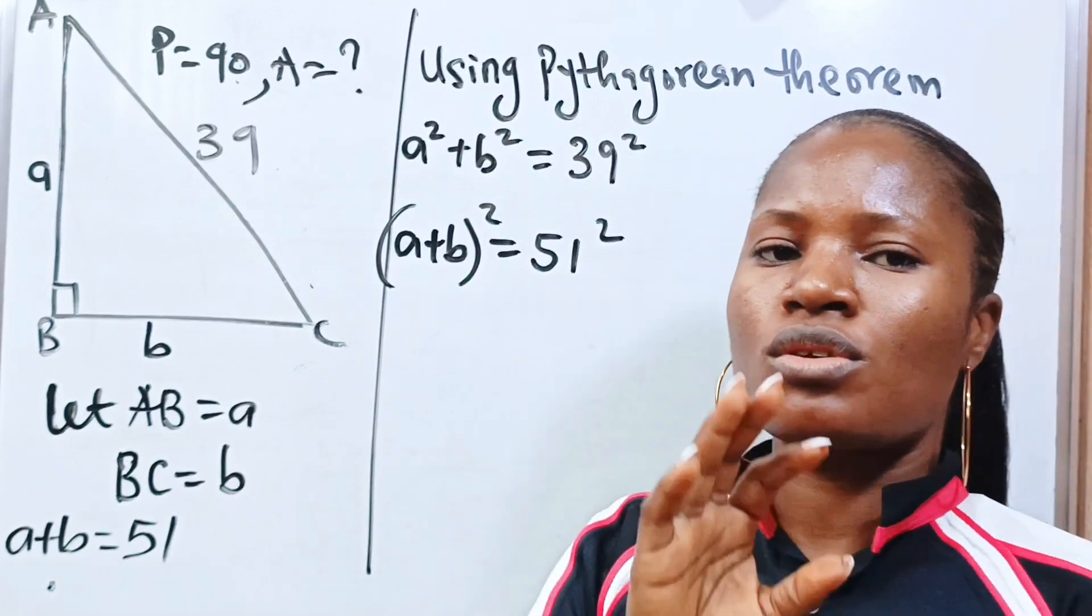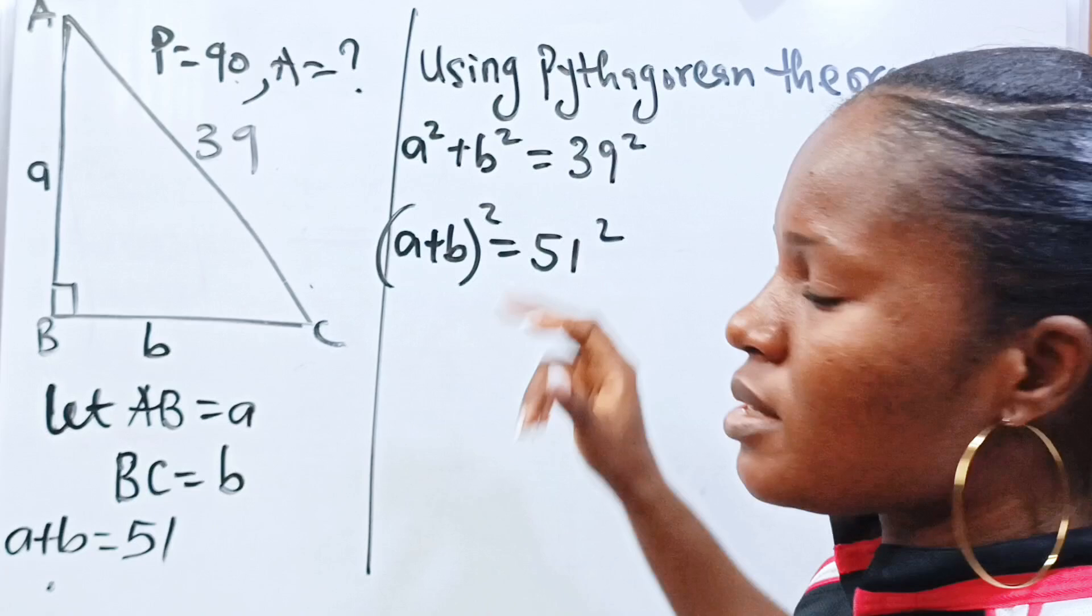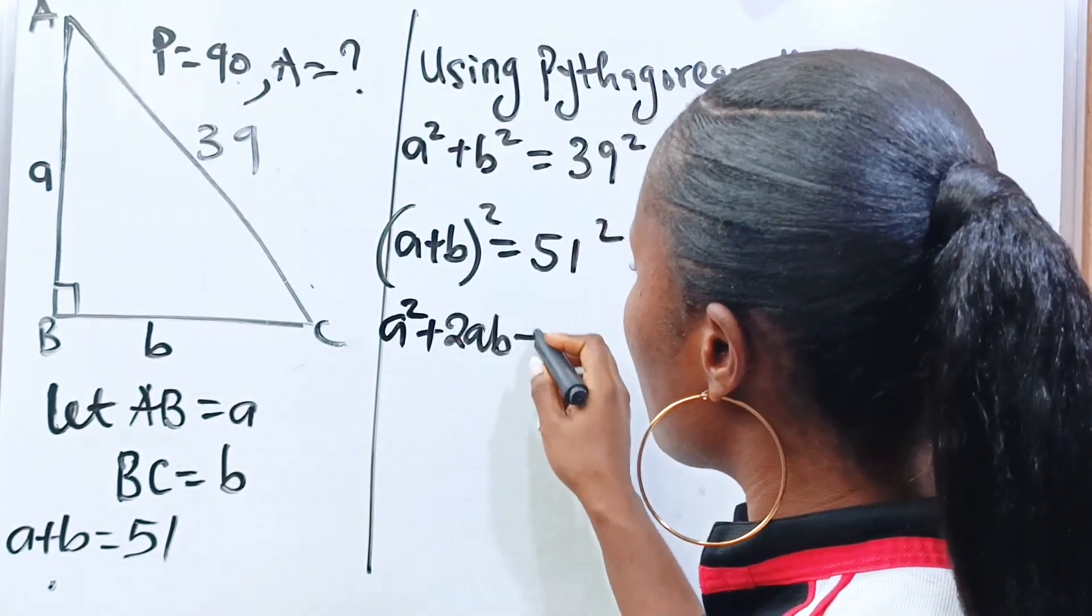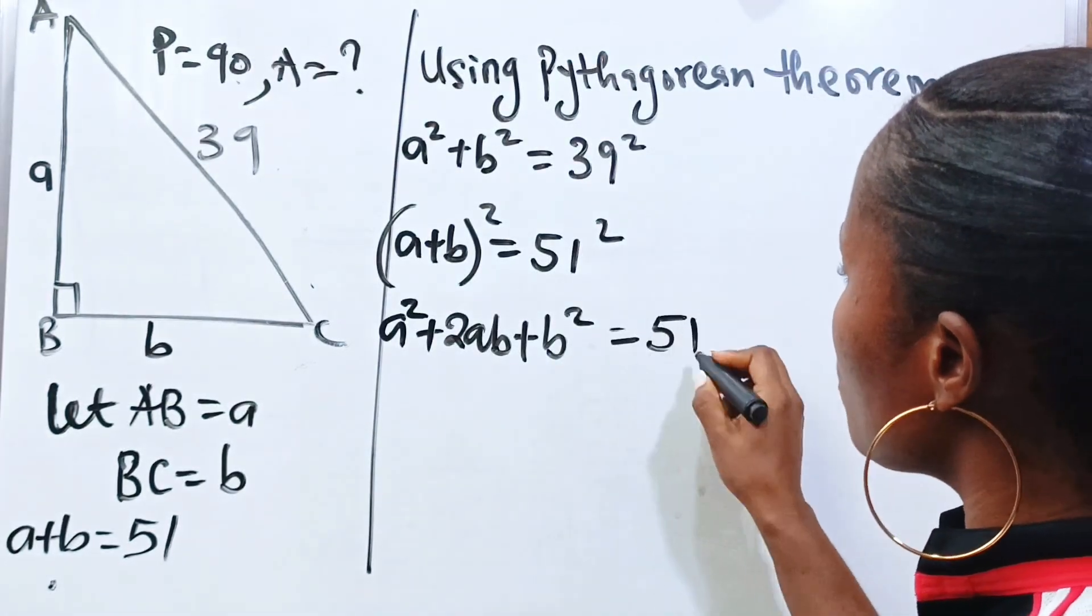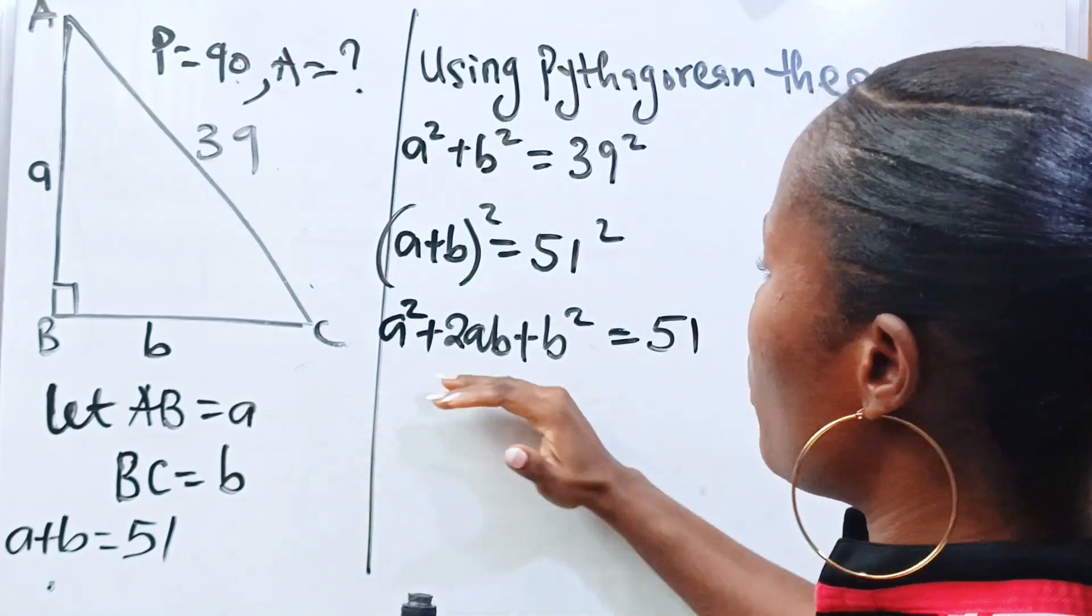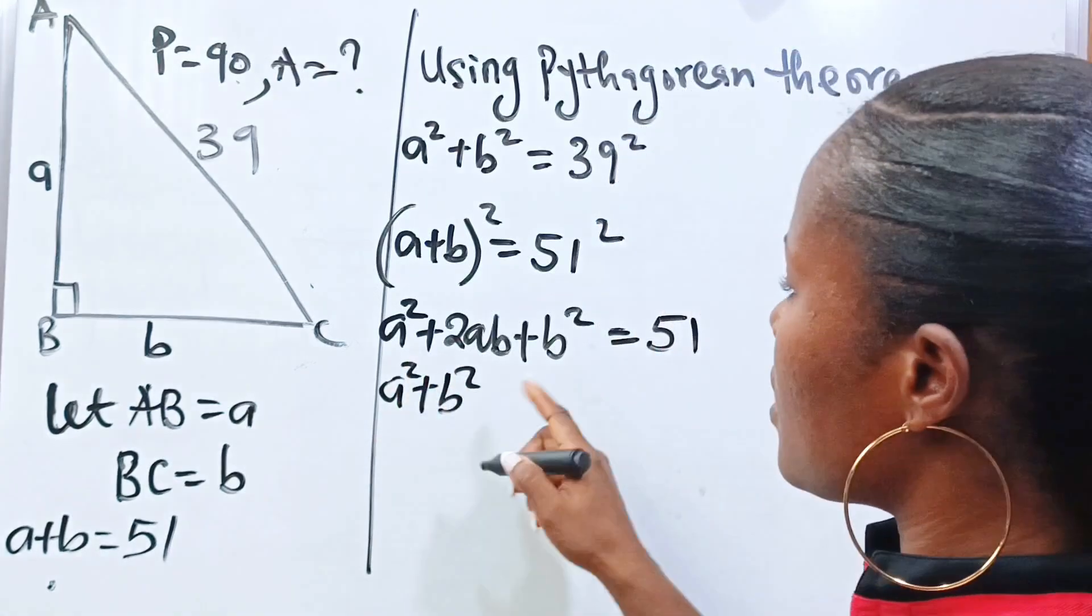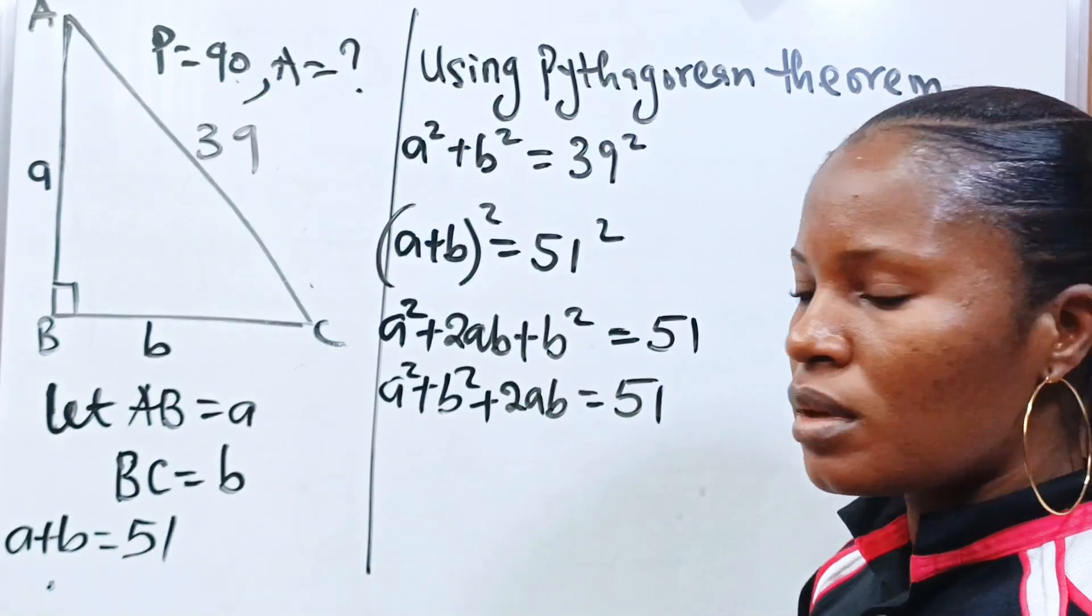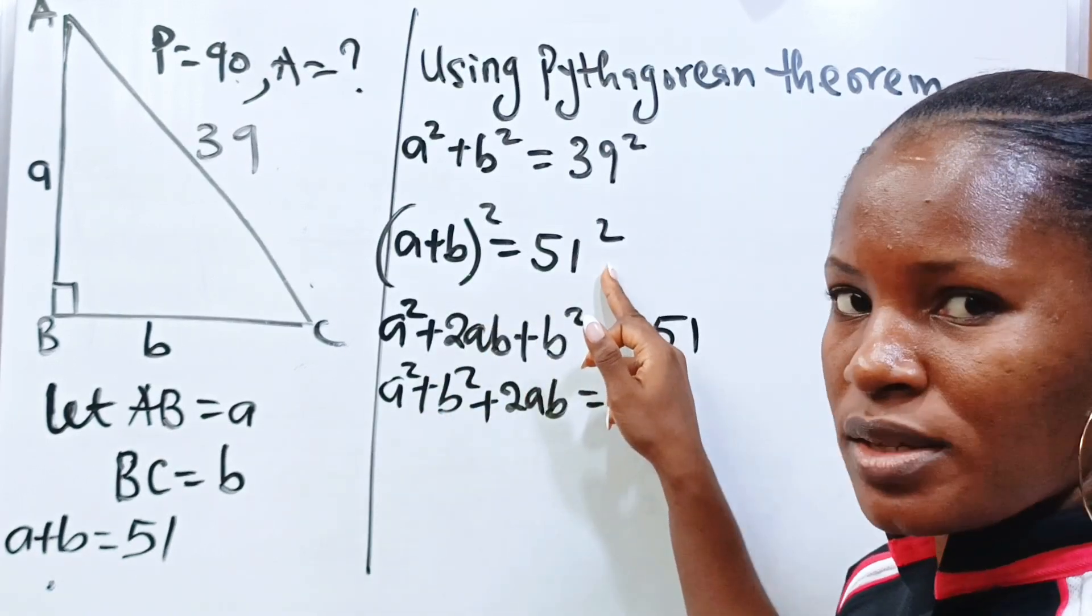Now, according to the algebra identity, a plus b all squared is equal to a squared plus 2ab plus b squared. And this is equal to 51 squared. Now, we look at this, we have a squared plus b squared plus 2ab is equal to 51 squared. Now, a squared plus b squared is 39 squared.